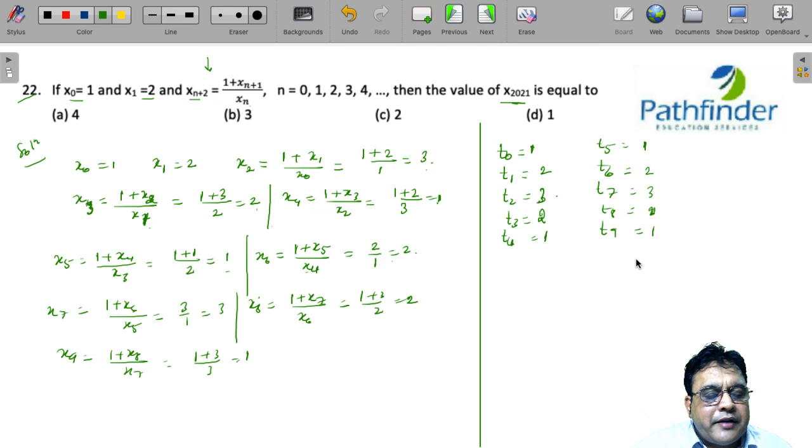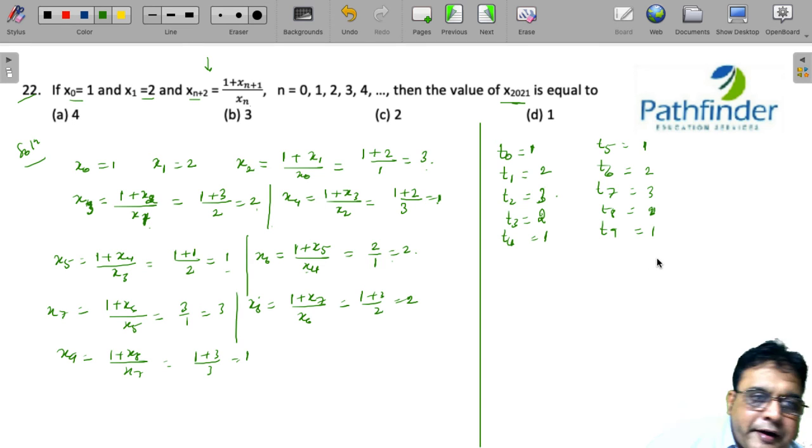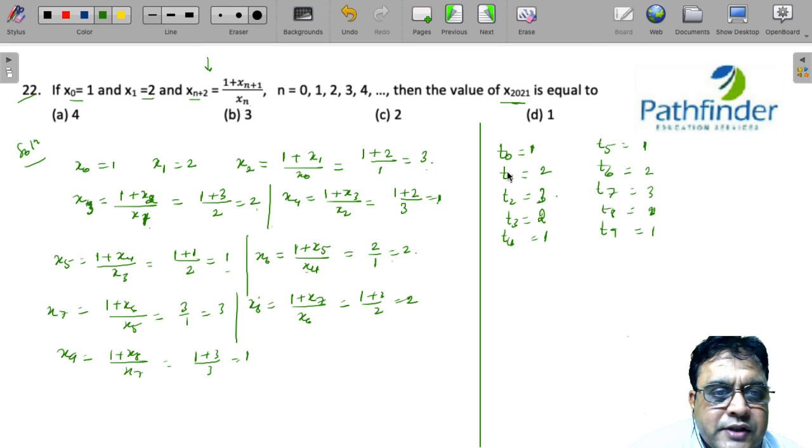So you can see very easily that this is a sequence: 1, 2, 3, 2, 1, 1, 2, 3, 2, 1, and so on. And this sequence is of 5 terms. What does this mean to you? I would rather start the sequence from the second term. So t₁, t₂, t₃, t₄, and t₅ is 1. So t₆, t₇, t₈, t₉, t₁₀ once again must be 1.